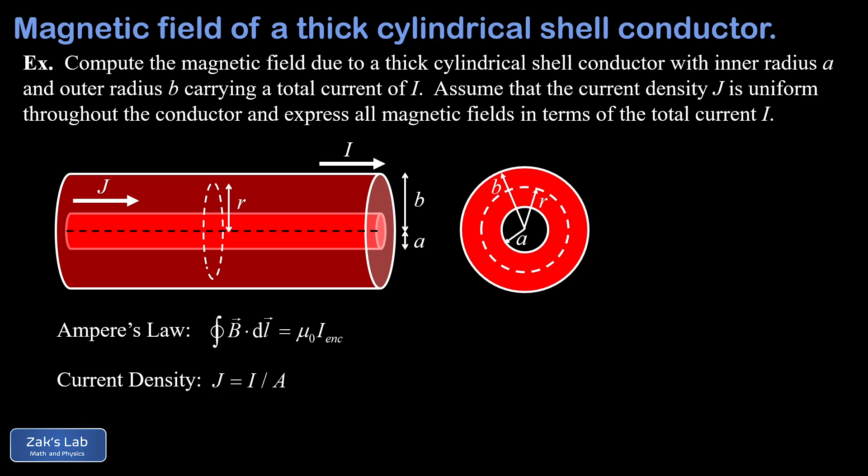We have three regions where we want to compute the magnetic field: inside the inner radius a, outside the outer radius b, and within the conductive material itself. We're told that the current density j (current per unit cross-sectional area) is uniform, having the same value throughout the entire conductive cross-section. We're also asked to express all magnetic field magnitudes in terms of the total current I.